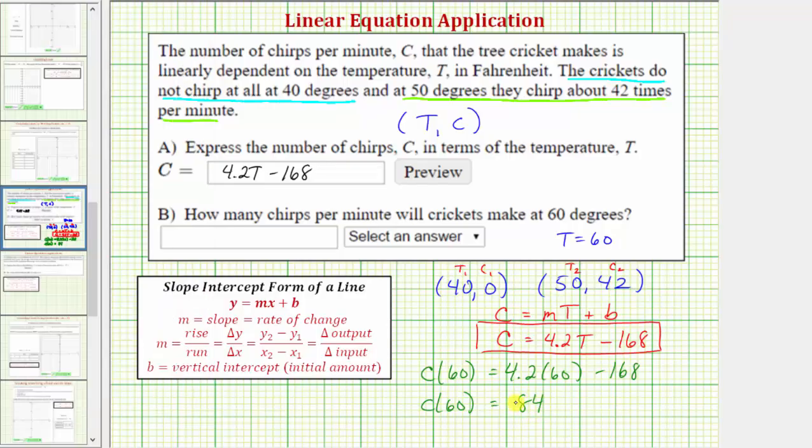And remember C is the number of chirps per minute. So looking at part B, our answer is 84, and the units are chirps per minute.